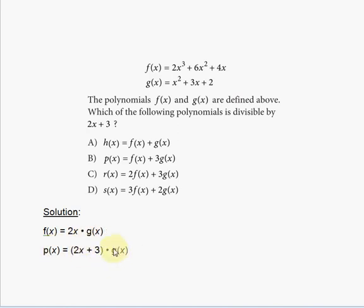And that means that this polynomial is divisible by 2x plus 3. So therefore answer choice B is the correct answer choice. You don't have to work these answers out the same way.